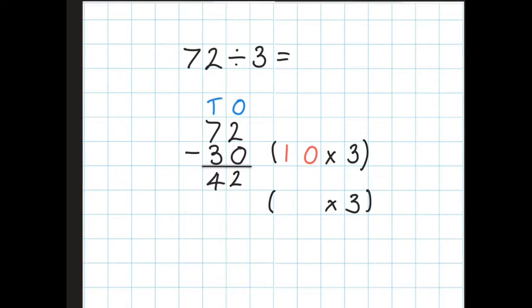I'm going to go ahead and take off another 10 chunks of 3. So once again, 10 times 3 is 30, and 42 minus 30 is 12. So now we're left with 12.